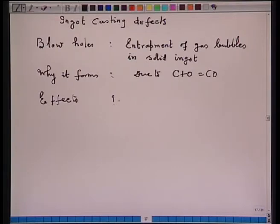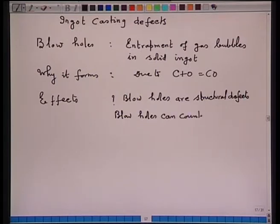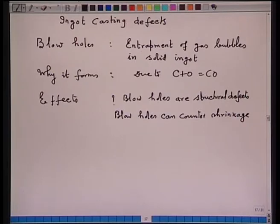Blow holes are structural defects. However, blow holes can counter the shrinkage, and one can also eliminate the shrinkage cavity because of the stirring provided by carbon monoxide bubbles during solidification. Blow holes situated interior to the ingot can be welded up during rolling.